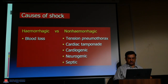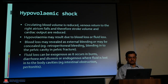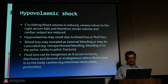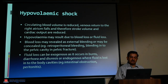Causes of shock include hemorrhagic and non-hemorrhagic causes. Non-hemorrhagic causes include tension pneumothorax, cardiac tamponade, cardiogenic, neurogenic, and septic shock. In hypovolemic shock, circulating blood volume is reduced, venous return to the right atrium falls, and therefore stroke volume and cardiac output are reduced. Blood loss may be external or concealed, such as retroperitoneal bleeding or pelvic fracture. Fluid loss can be exogenous (burns, diarrhea, diuresis) or endogenous (intestinal obstruction, peritonitis).